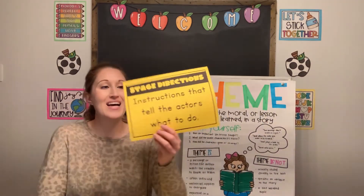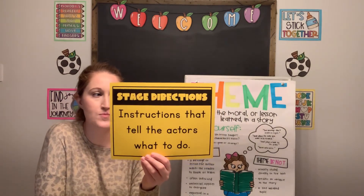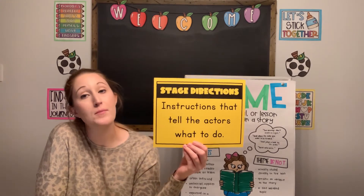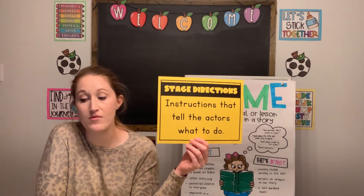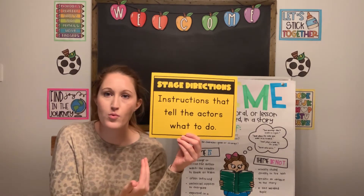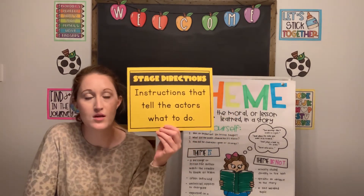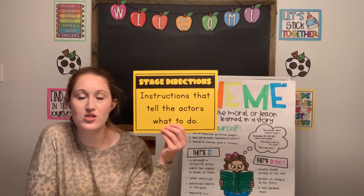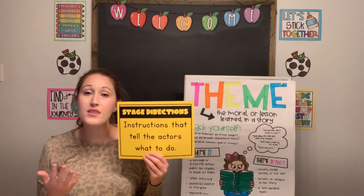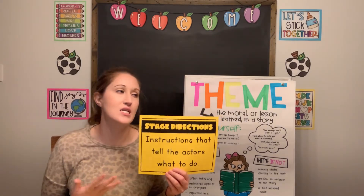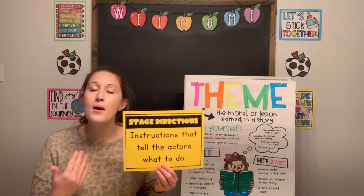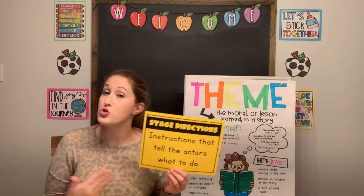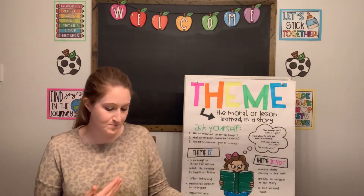The script also has the stage directions — those are the instructions that tell the actors what to do, some of the movements they might need to make, some of the actions they might need to do. We talked about how the text used for stage directions might look a little different. We might have it inside parentheses or highlighted in italics. It's going to be different to make it stand out so you don't accidentally read it.